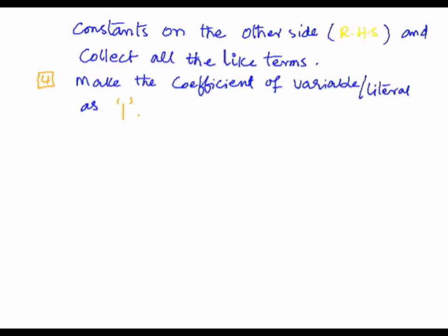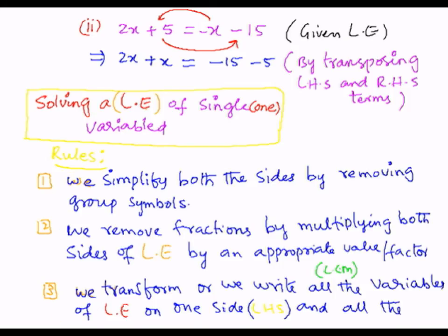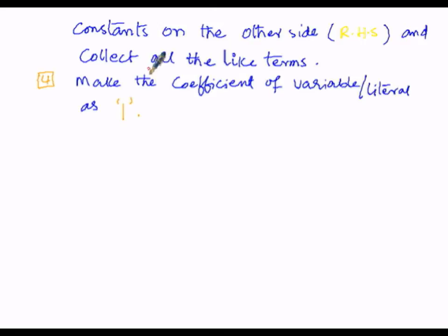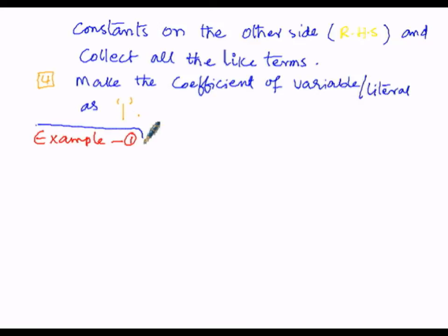By utilizing all four steps to find the variable's value in a linear equation of single variable: first, simplify both sides by removing group symbols; second, remove fractions by multiplying both sides by the LCM; third, write all variables on the left side and all constants on the right side and collect like terms; and fourth, make the coefficient of the variable equal to one, which gives the root of the equation. Now let us perform example number one using these four steps.